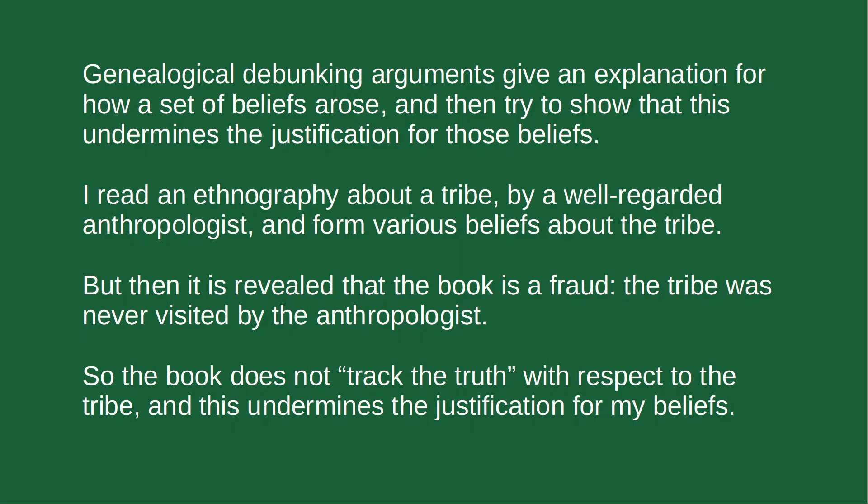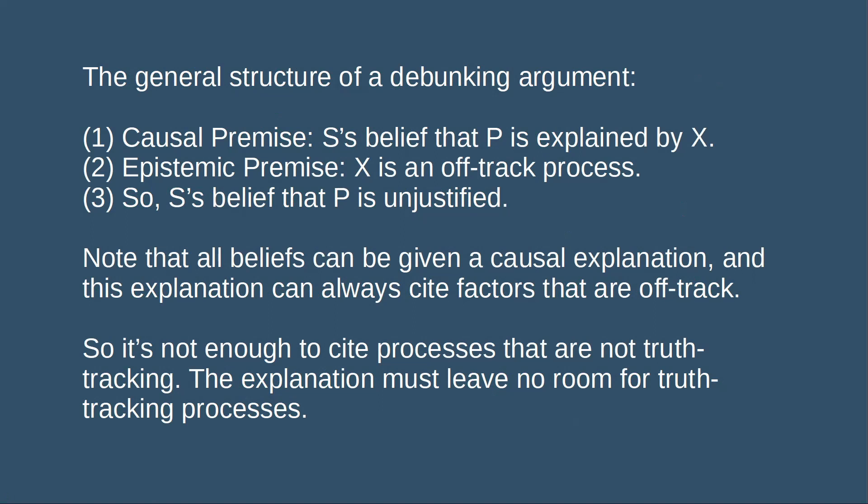Guy Kahane in his article on evolutionary debunking arguments states the general structure of a debunking argument like this. First we have a causal premise: S's belief that P is explained by X. Then we have an epistemic premise: X is an off-track process — X does not track the truth in the same way that the ethnography doesn't track the truth about the tribe in the Amazon. So we conclude S's belief that P is unjustified.